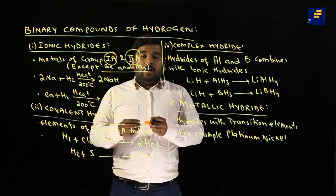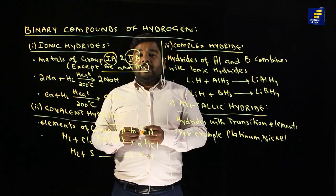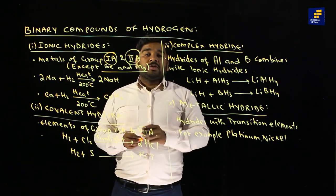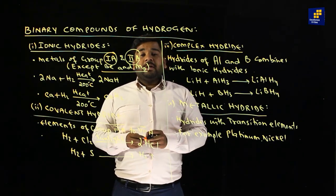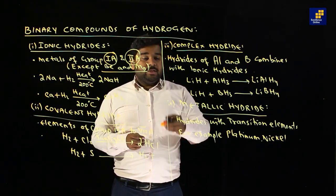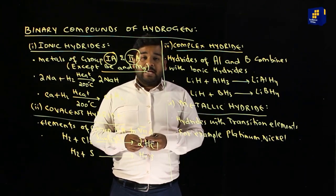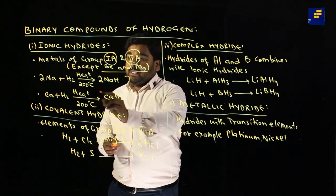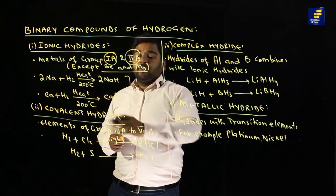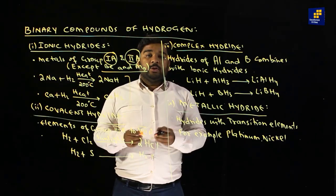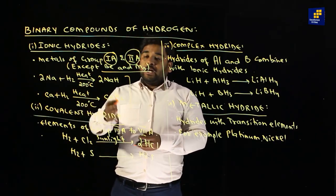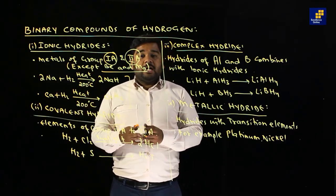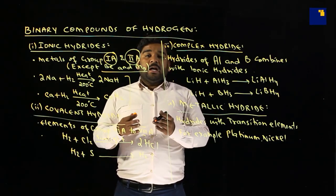Exam में एक number का scientific reason दिया जाता है कि क्यों beryllium और magnesium ionic hydride नहीं बनाते — because beryllium और magnesium polymeric hydride बनाते हैं। Equations में: अगर sodium और hydrogen आपस में मिलते हैं तो NaH बनता है, और calcium और hydrogen आपस में मिलते हैं तो CaH₂ बनता है।